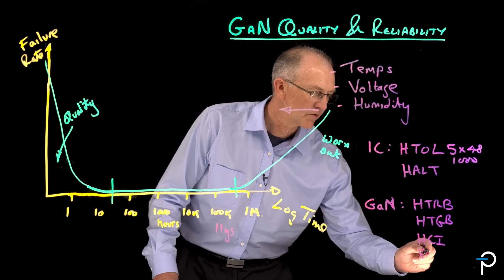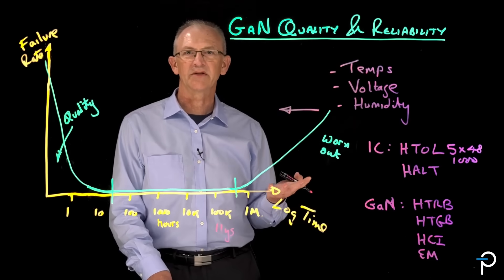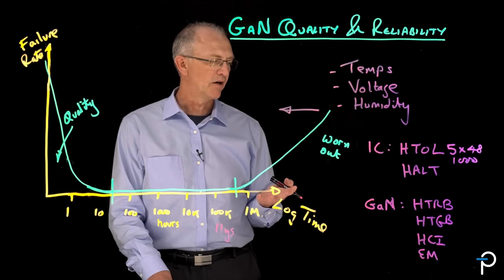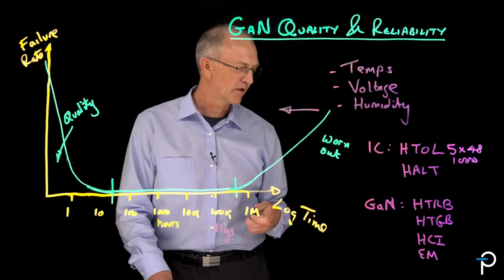We do an electro-migration test to make sure that our conductors, all the metal that's on top of the die, are appropriately sized and won't be pushed around by current flows.